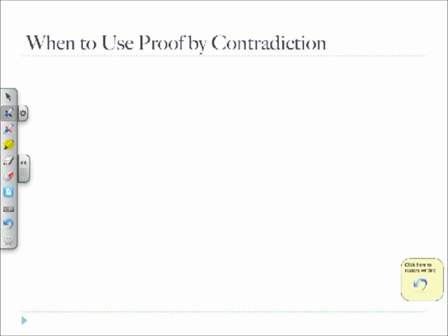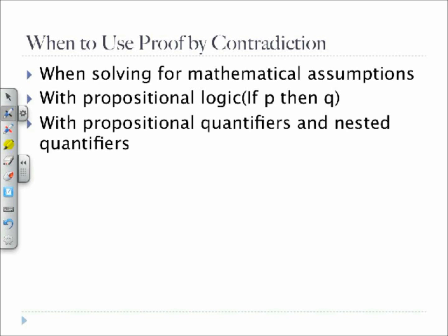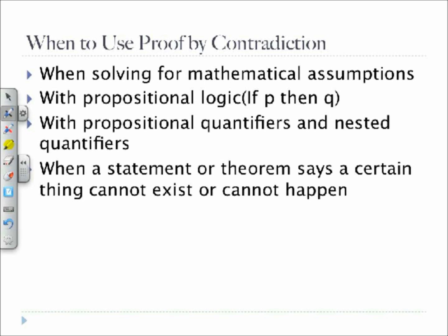So when to use proof by contradiction. Proof by contradiction can be a very nice method to use when solving difficult proofs. Thus, proof by contradiction is best used in certain situations, such as when solving for mathematical assumptions, such as the square root of 2 is irrational, with propositional logic, like if P then Q, with propositional logic that involves nested quantifiers, or when a statement or theorem says a certain thing cannot exist or cannot happen. So, when you are already given the negation of something.